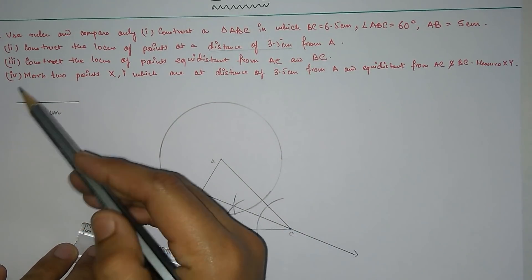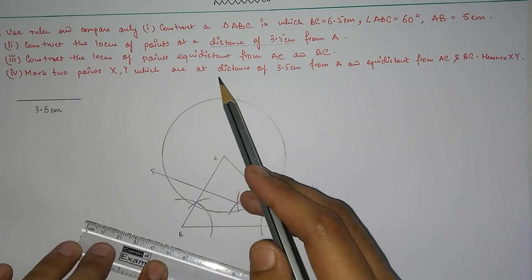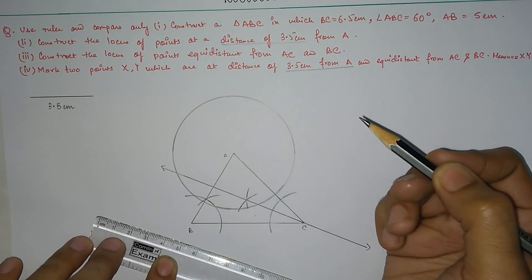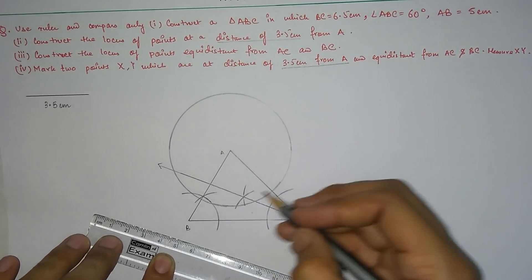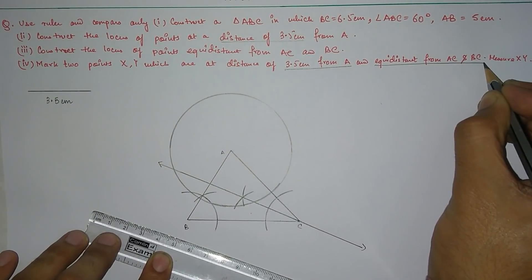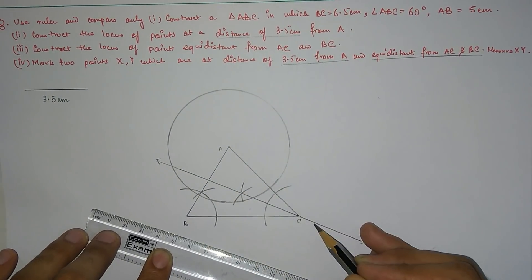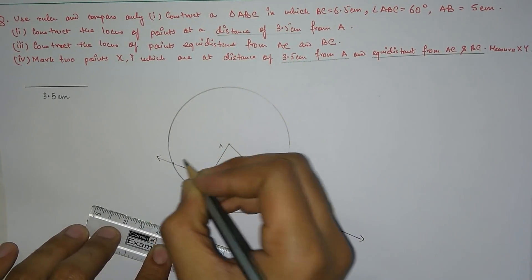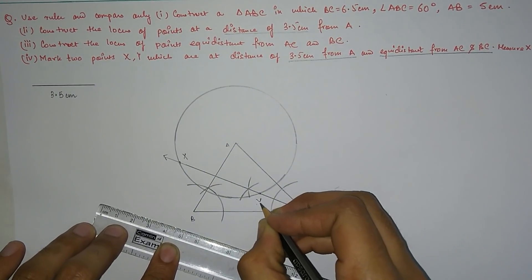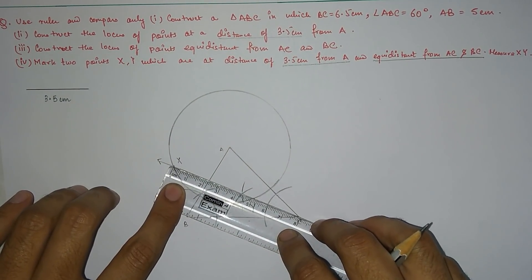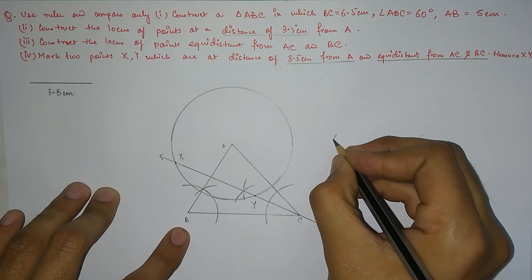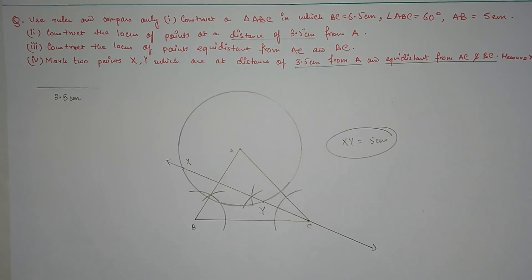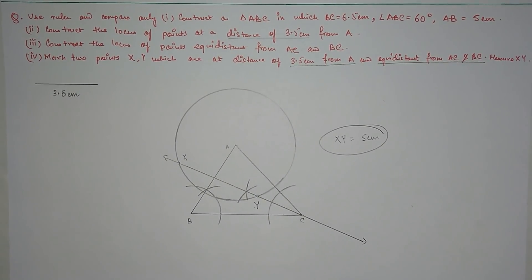Number four: mark two points X and Y at a distance of 3.5 cm from A and equidistant from AC and BC. All points on the circumference of the circle are 3.5 cm from A, and all points on the angle bisector line are equidistant from AC and BC. Therefore the two intersections of the angle bisector with the circle give us points X and Y. Measuring the length: XY is approximately 5 cm. This is the complete construction. New videos are lined up and will be uploaded soon — stay tuned. This is Deception signing off.